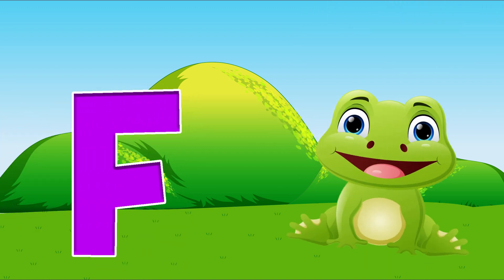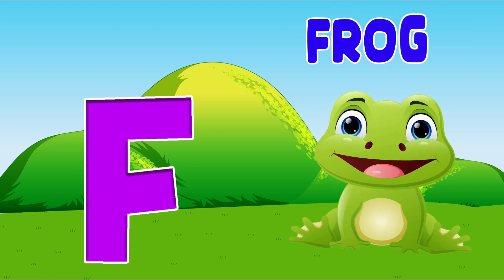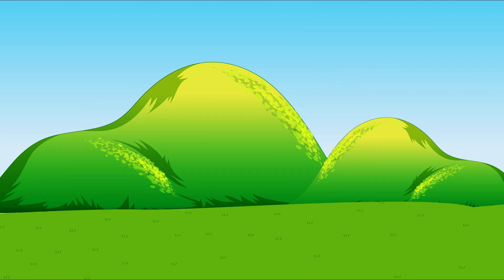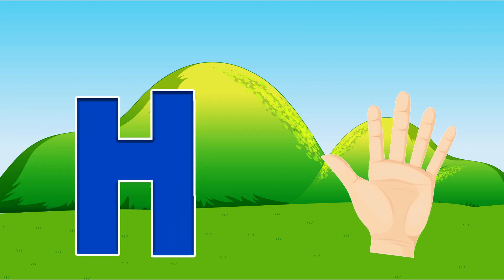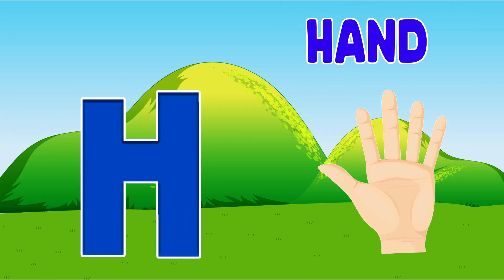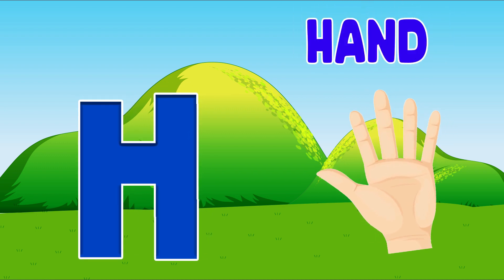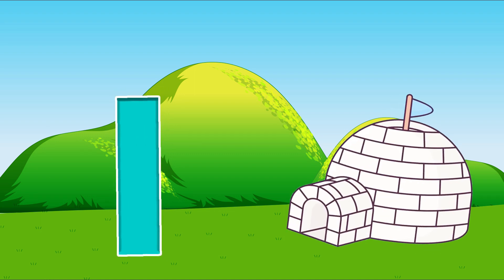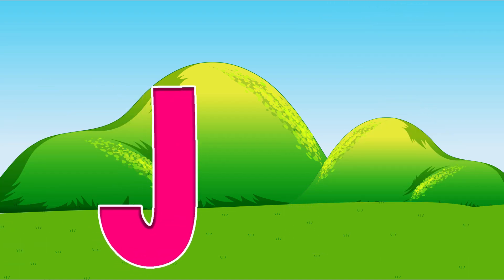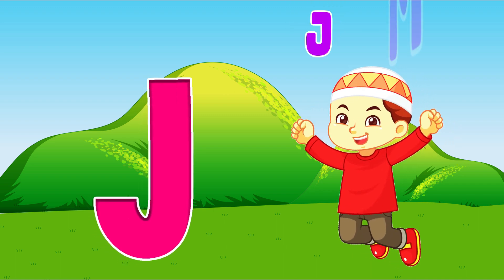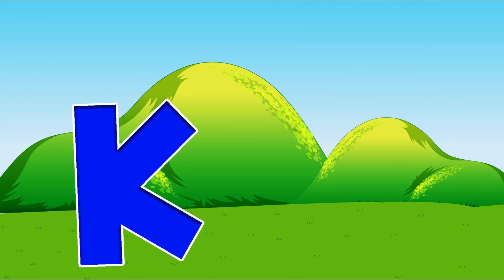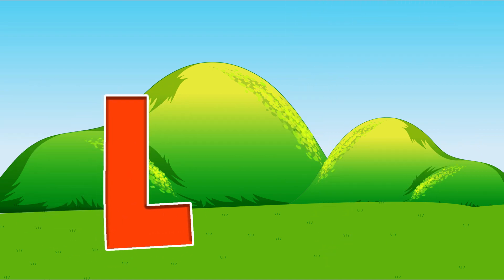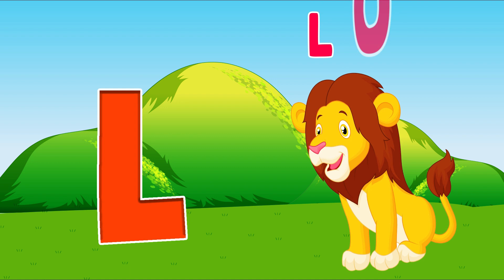F is for frog, F-f-frog. G is for goat, G-g-goat. H is for hand, H-h-hand. I is for igloo, I-i-igloo. J is for jump, J-j-jump. K is for kangaroo, K-k-kangaroo. L is for lion, L-l-lion.